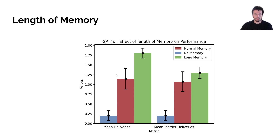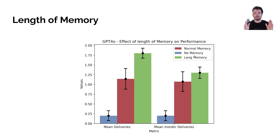When you add normal working memory, the mean delivery shoots up to around one dish per game, which is much better. Adding a longer memory — specifically an infinite-length memory rather than just the last five actions — yields even better performance.